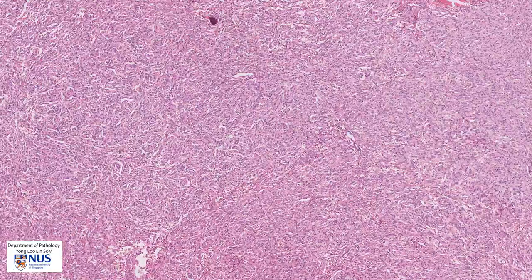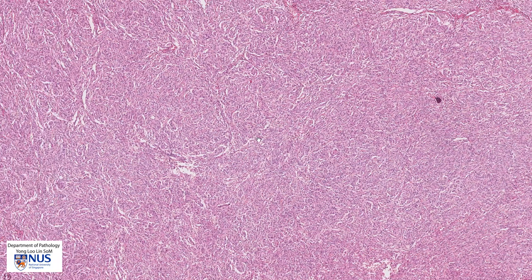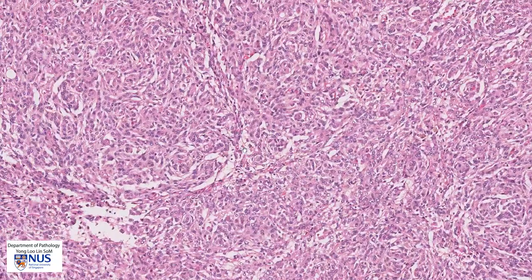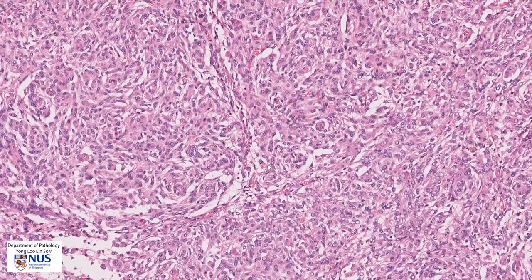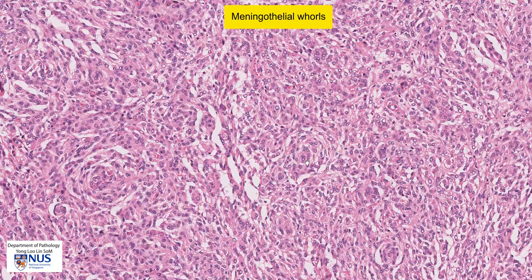Going back to lower magnification, we also get the feeling that there are some kind of rounded arrangements of cells. These somewhat whirly structures are known as meningothelial whorls, and we can see some nice examples here.